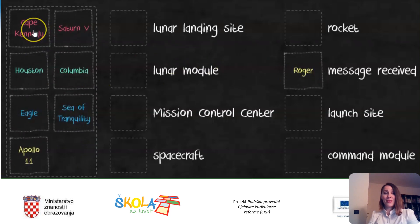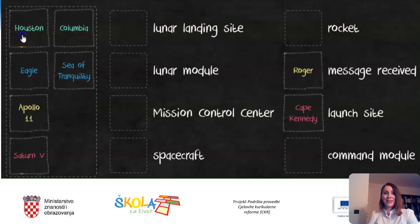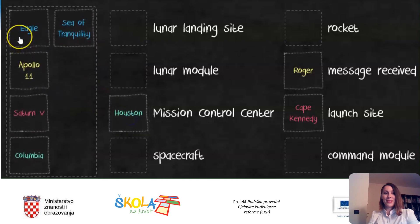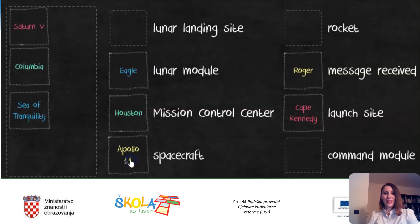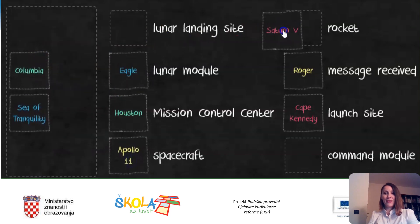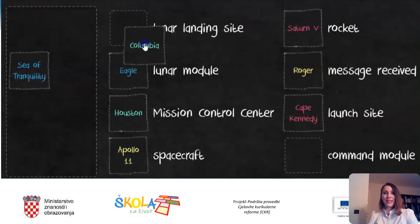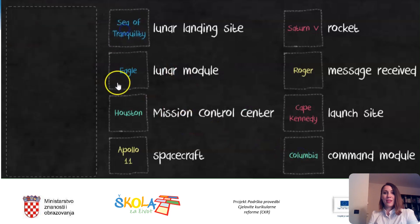And here is the answer key: Roger — message received; Cape Kennedy — launch site; Houston — mission control center; Eagle — lunar module; Apollo 11 — spacecraft; Saturn 5 — rocket; Columbia — command module; Sea of Tranquility — lunar landing site.